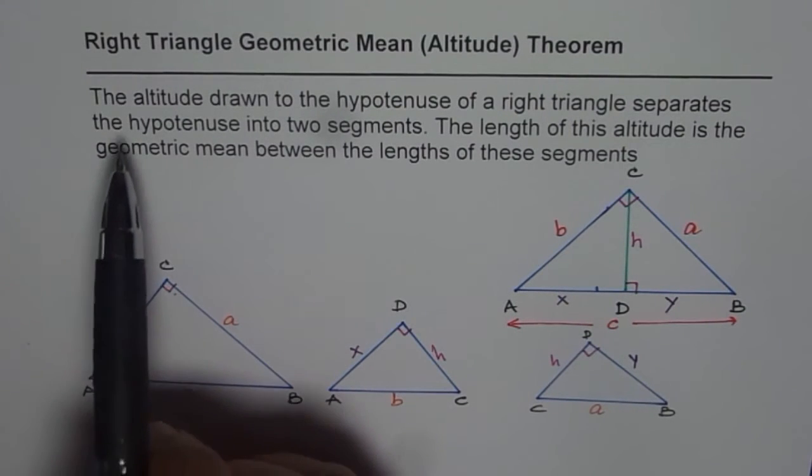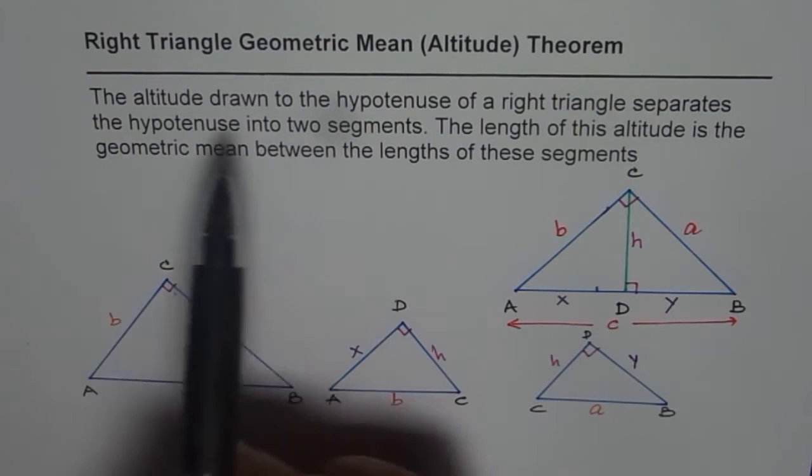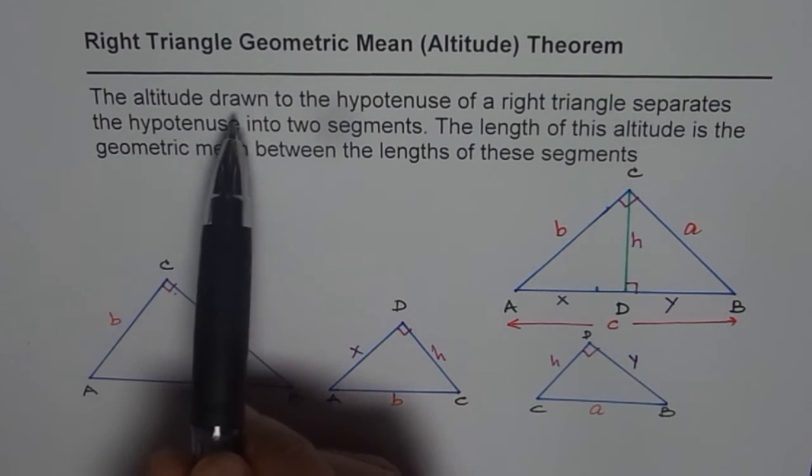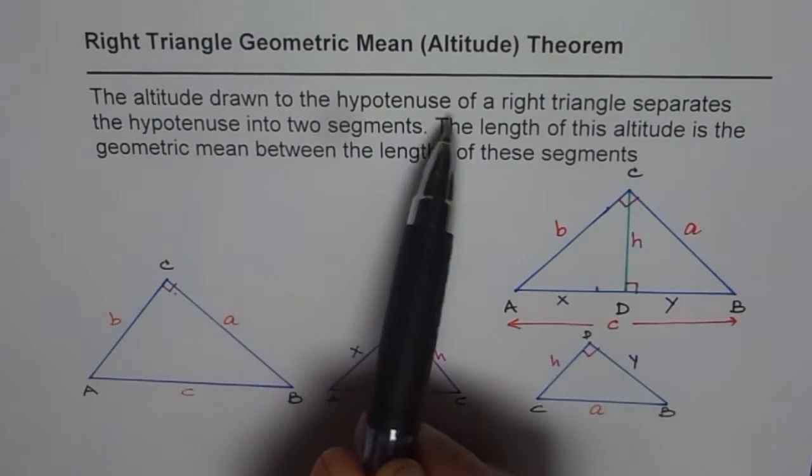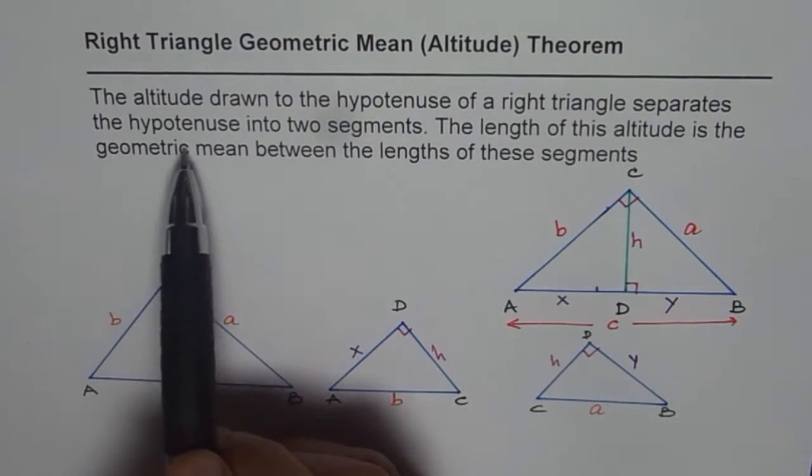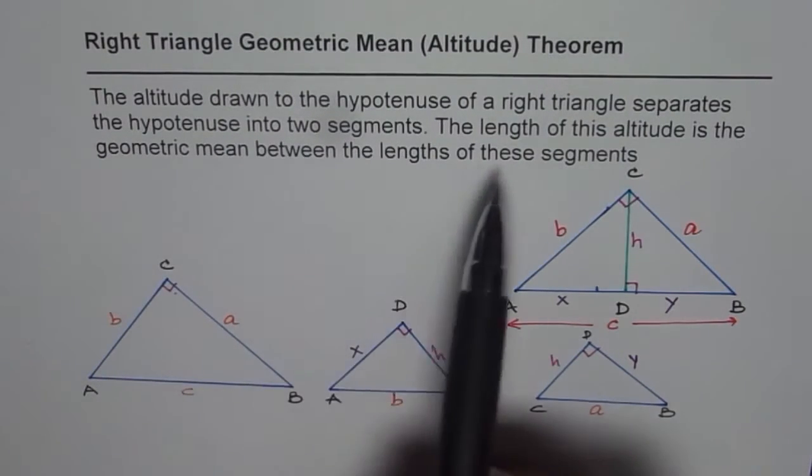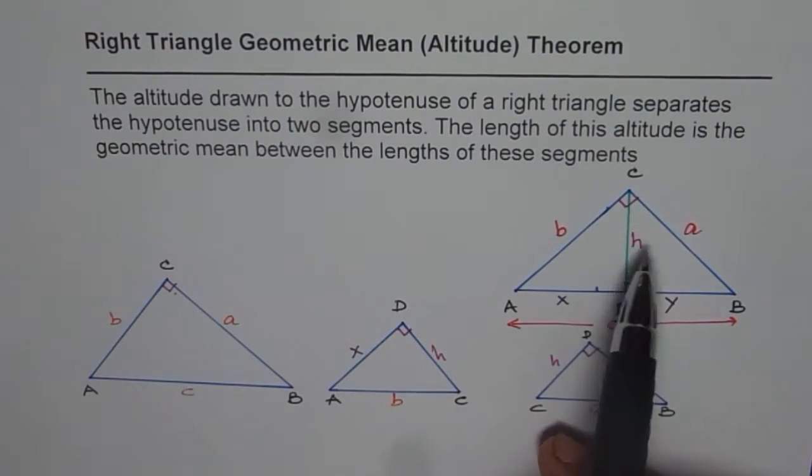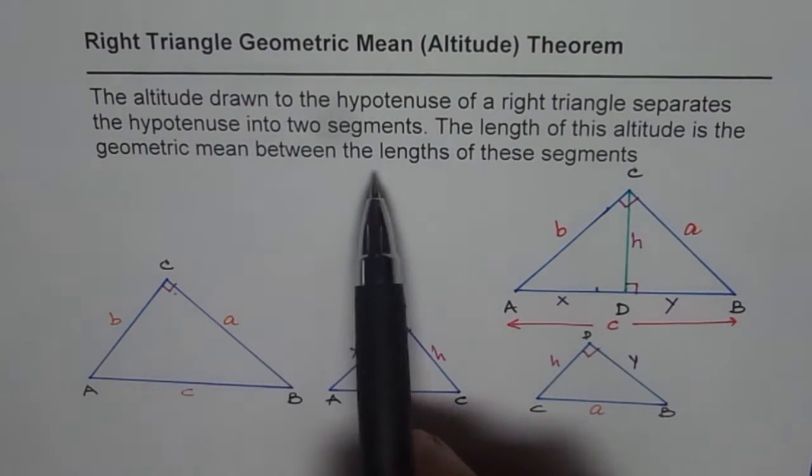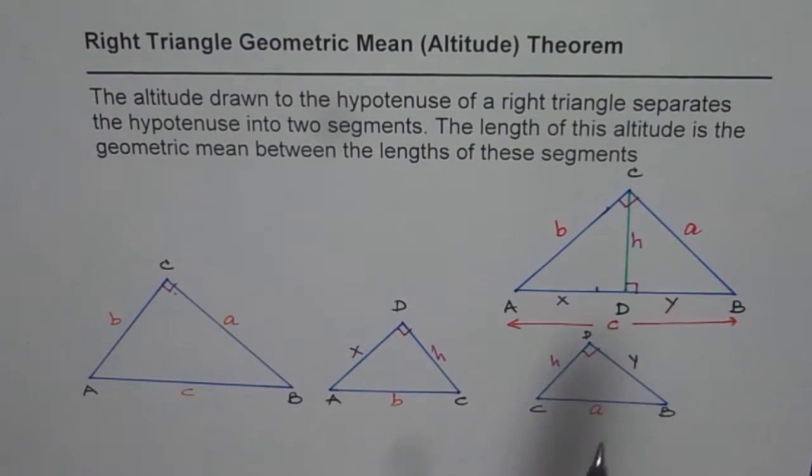So the theorem here is: the altitude drawn to the hypotenuse of a right triangle separates the hypotenuse into two segments. The length of this altitude is the geometric mean between the lengths of these two segments.